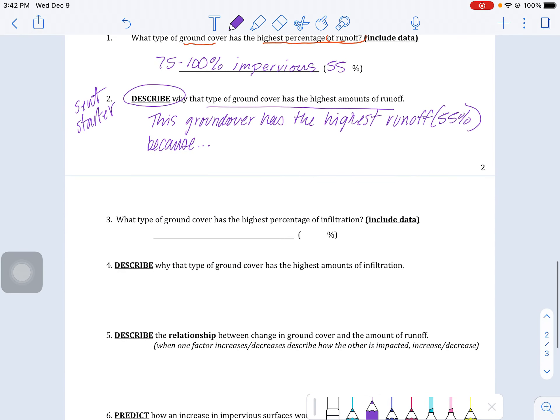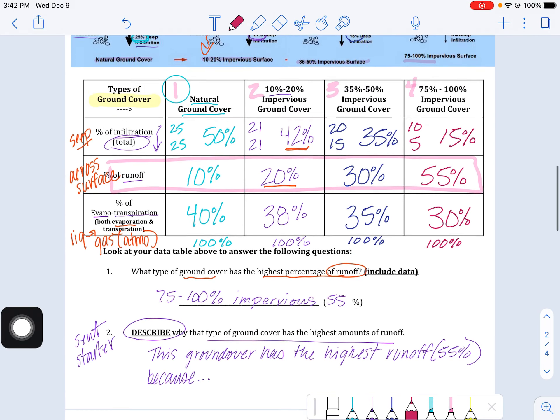And as we look to question three and four, we have a really similar pack of questions here. We're being asked what type of ground cover has the highest percent infiltration, so we want to give the name and include the data again. And then our number four is that describe why there's a high amount of infiltration. So you can use the same sentence starter: this groundwater has the highest infiltration because, and then why do I see the most infiltration happening?